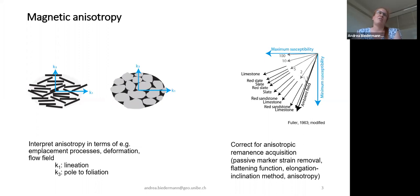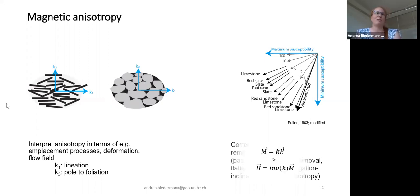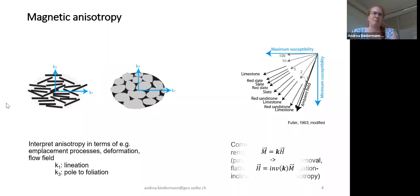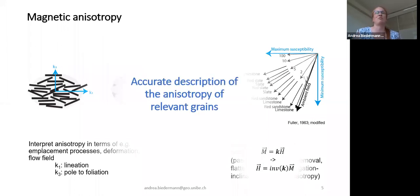Mathematically it all seems simple: magnetization equals the anisotropy tensor K times field. If we want to invert that, the field is the inverse of the tensor times the magnetization. The big challenge is that we have to define that tensor K — and that is basically what I want to talk about today.